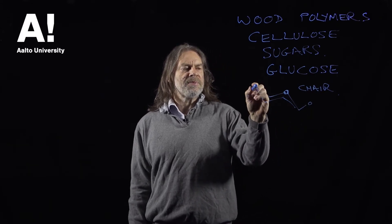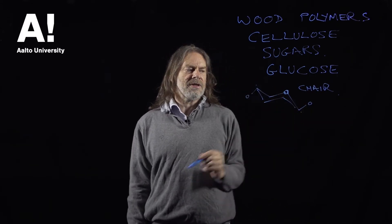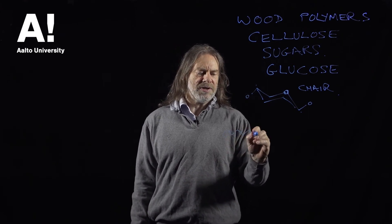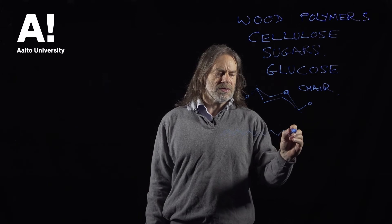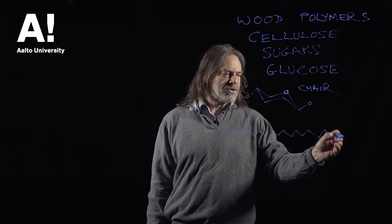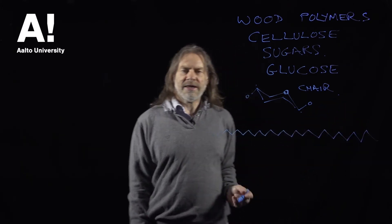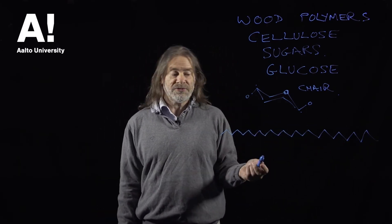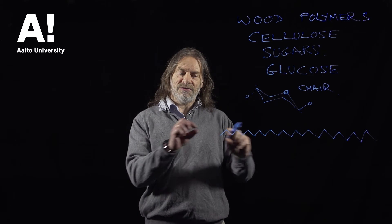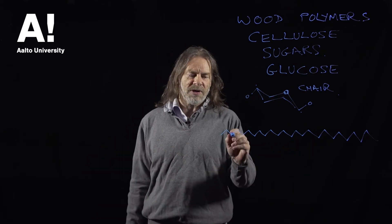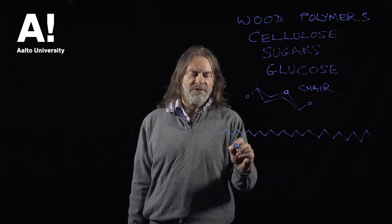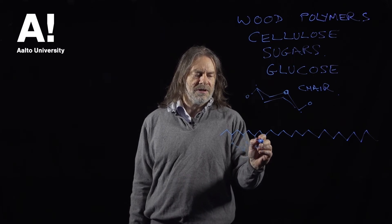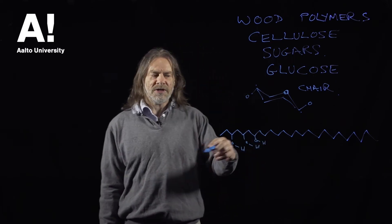Basically they bond together at this position and this position, and when we get this bonding between glucose molecules we end up forming a structure like that. This polymer, which is made up of lots and lots of monomers, is a very long, very straight molecule, and sitting off the side of this molecule are lots and lots of hydroxyl groups.